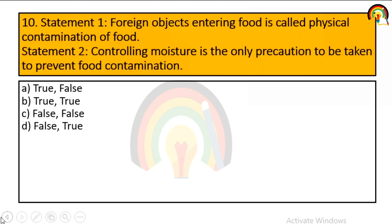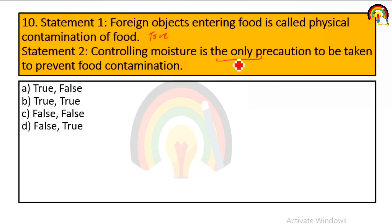Statement 1: entry of an object into food is called physical contamination of food — that is absolutely true. Statement 2: controlling moisture is the only precaution to prevent food contamination. In science, absolute statements are most often incorrect, so this statement is false. Therefore, the first option is correct.